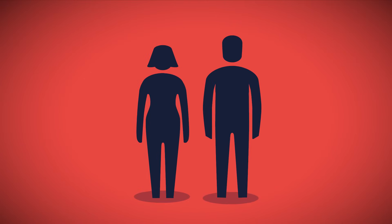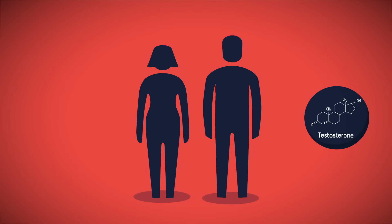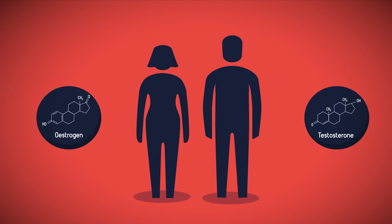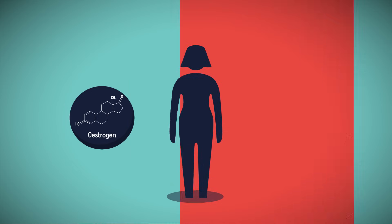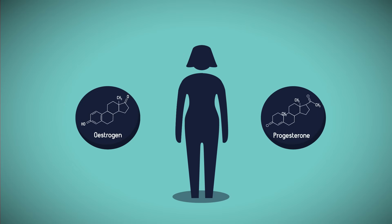In conclusion, the development of secondary sexual characteristics during puberty is stimulated by testosterone in males and oestrogen in females. Oestrogen and progesterone are important hormones in regulating the menstrual cycle in females.